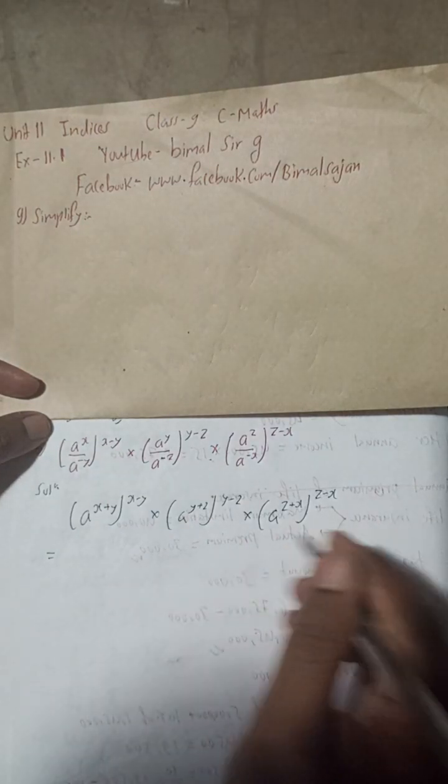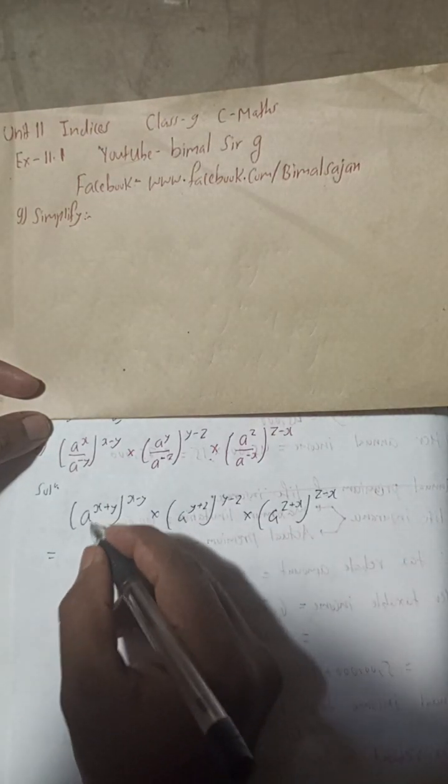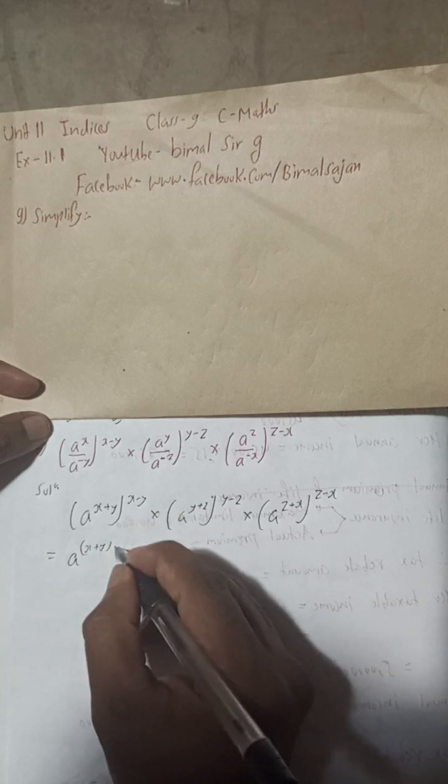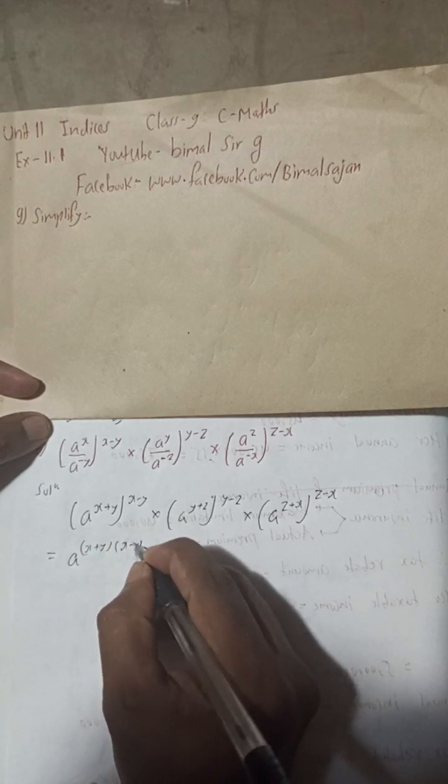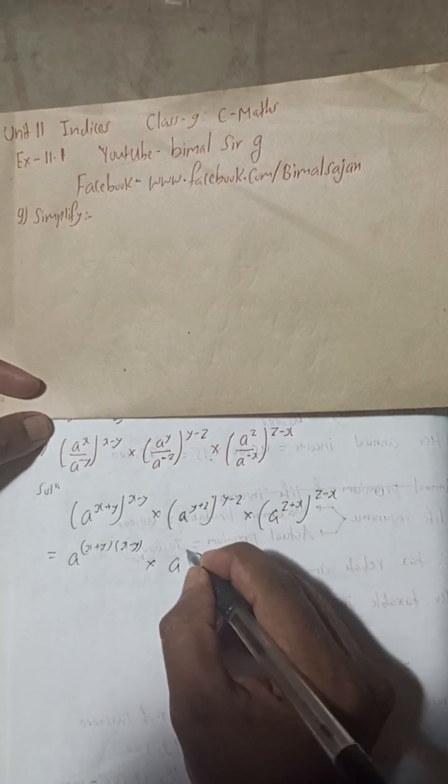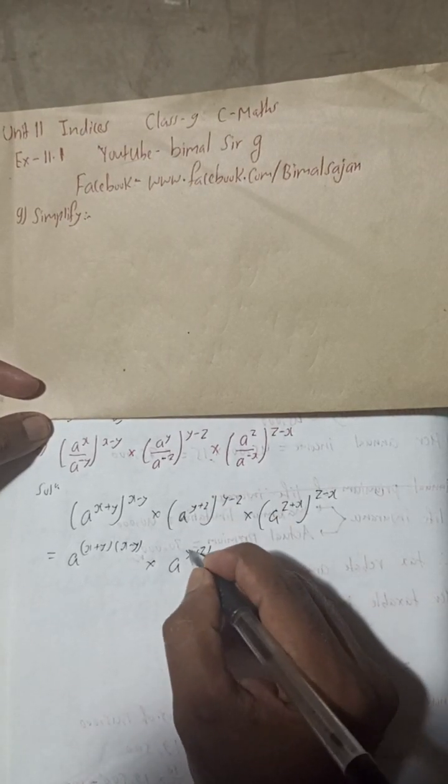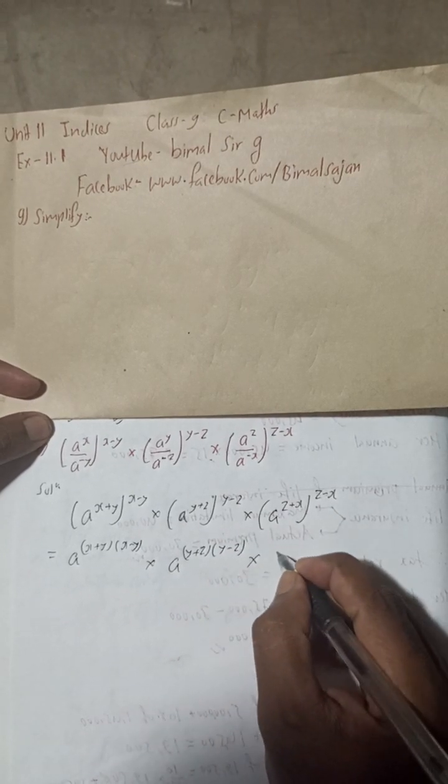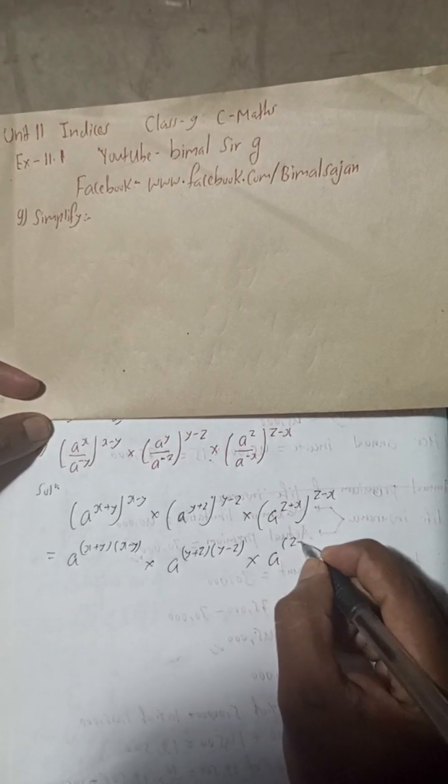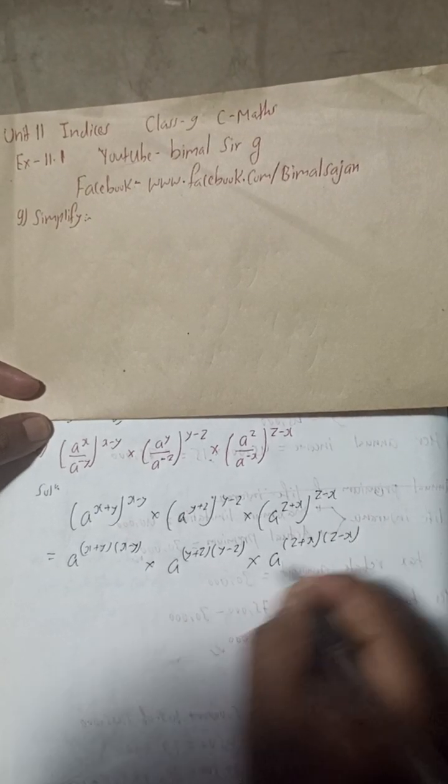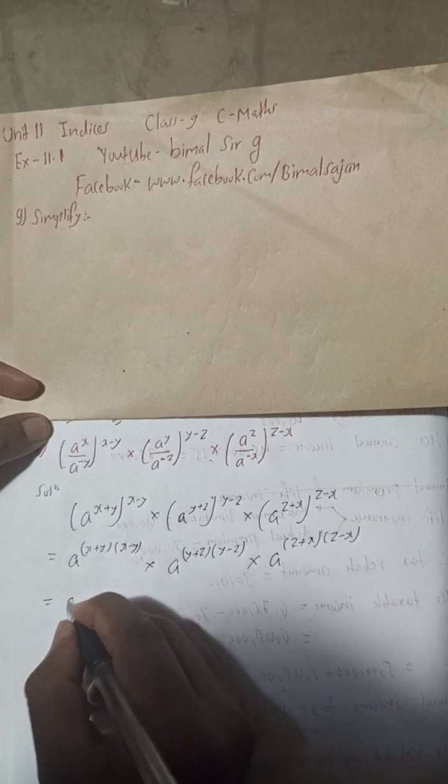I have skipped one step, okay, I have to write this line but let it be, you can understand. Now this can be written as a to the power x plus y, and then this is x minus y, into a to the power here is y plus z, and power y minus z. Again, a to the power here is z plus x, and this is z minus x.